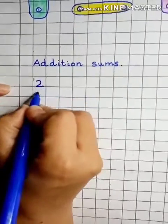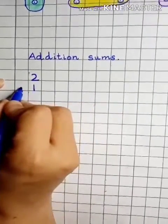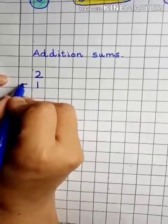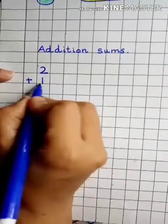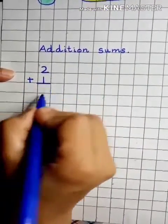Two plus one. This is called a plus sign. You will put it on this side. Draw a line here and here.